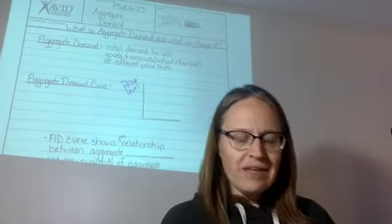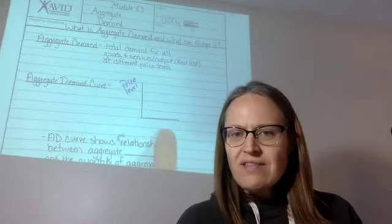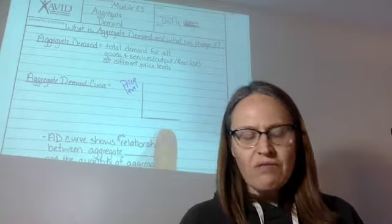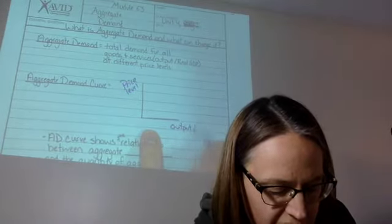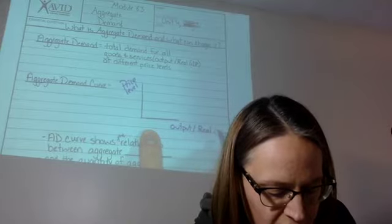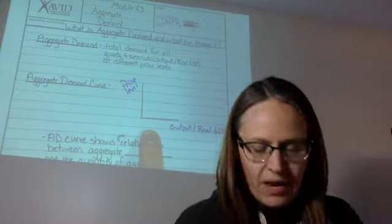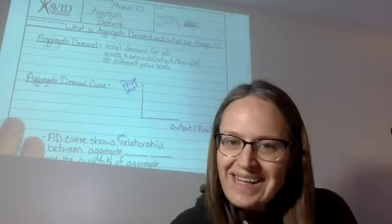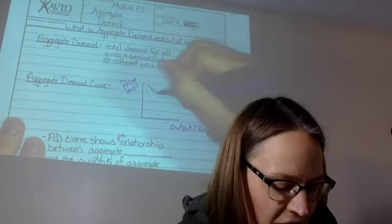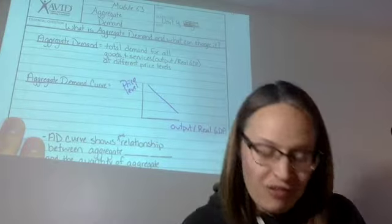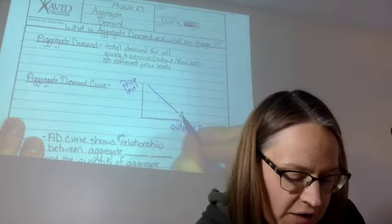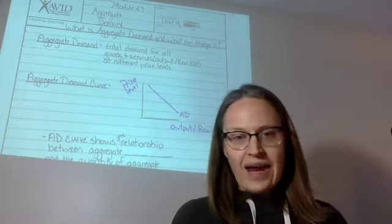Okay, so back here. And then over here, instead of quantity, we label that output slash real GDP. And then what's really nice is that our aggregate demand curve looks just like our demand curve, that downward sloping curve, and you label it AD for aggregate demand.